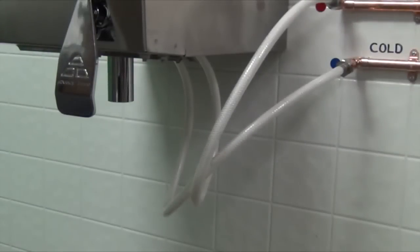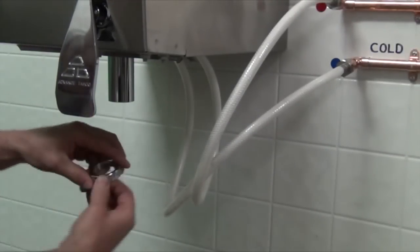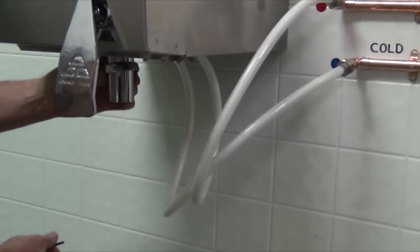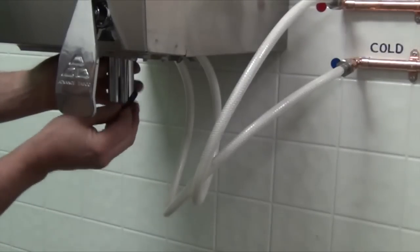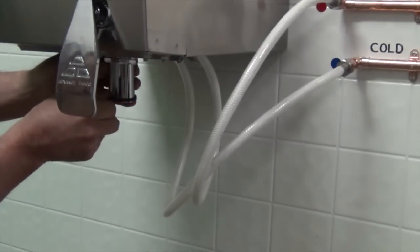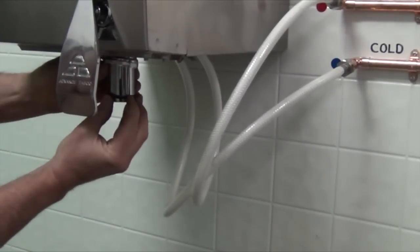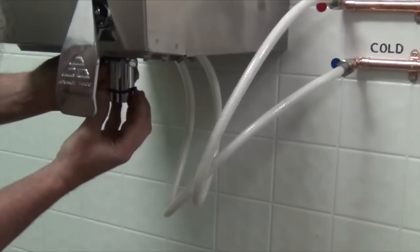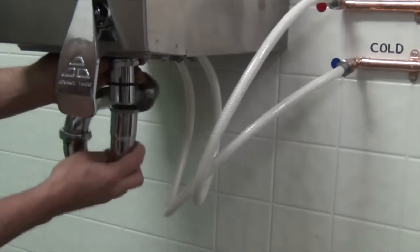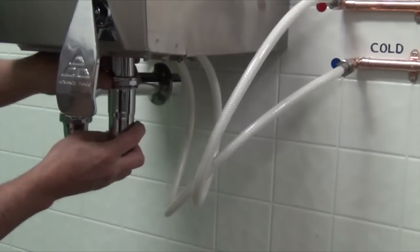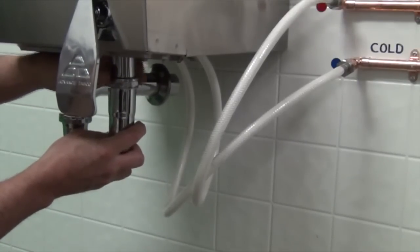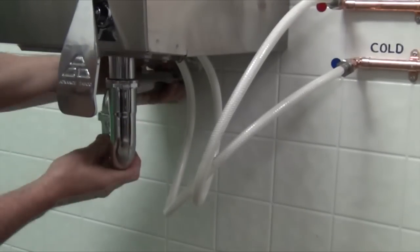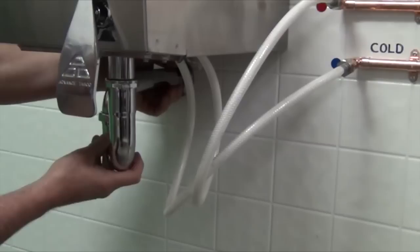The final step is to install the P-trap onto the tail piece installed earlier. First, slide the locking nut onto the tail piece followed by the rubber washer. Next, place the P-trap onto the tail piece as shown and securely tighten. Please note that the P-trap is not provided by Advanced Tabco.